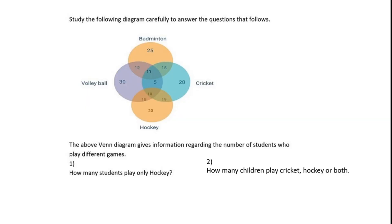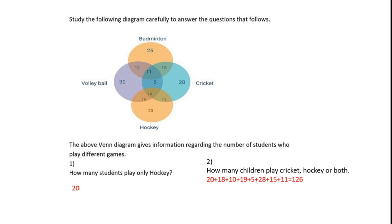This last question might seem intimidating as there are 4 circles, but the concept is still the same. Question 1 — how many students play only hockey: there are 20 students who play only hockey with no overlaps. Question 2 — how many children play cricket, hockey or both: add up all values in the hockey circle and the cricket circle — 20 plus 18 plus 10 plus 19 plus 5 plus 28 plus 15 plus 11 — giving an answer of 126.